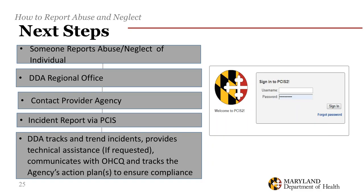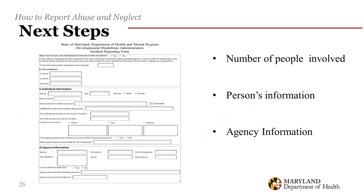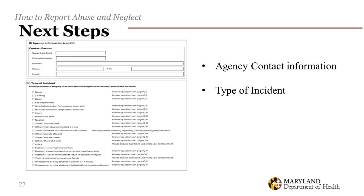Incident reporting information is entered into the PCIS system. The online incident reporting form collects information including the number of people involved, the persons' information, the agency information and contact information, the type of incident, the circumstances of the incident, the status of the person at the time of the report, the agency's immediate response, whether the person has a behavior plan, who witnessed the incident, whether staff was on duty, and other relevant information.